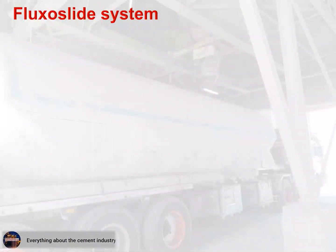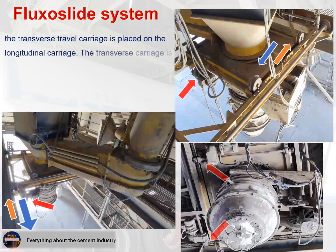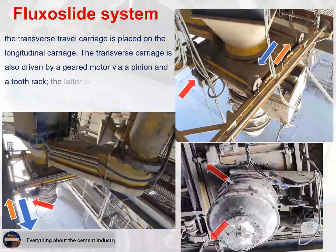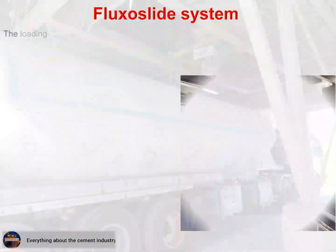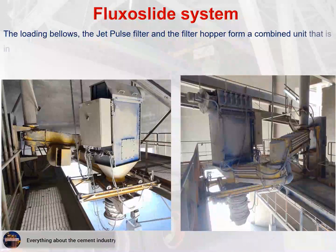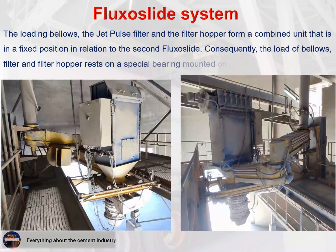Operation method — the Fluxo slide system: the transverse travel carriage is placed on the longitudinal carriage. The transverse carriage is also driven by a geared motor via a pinion and a tooth rack, the latter fitted on the carriage for longitudinal travel. The loading bellows, the jet pulse filter, and the filter hopper form a combined unit that is in a fixed position in relation to the second Fluxo slide. The load of bellows, filter, and filter hopper rests on a special bearing mounted on the carriage.